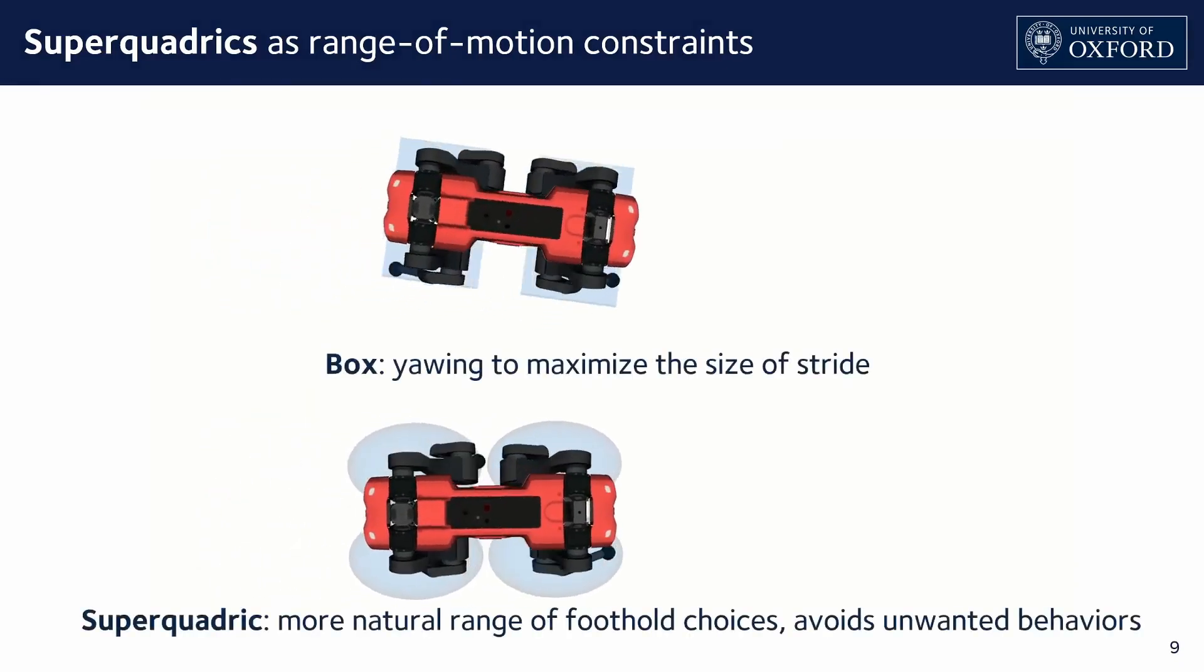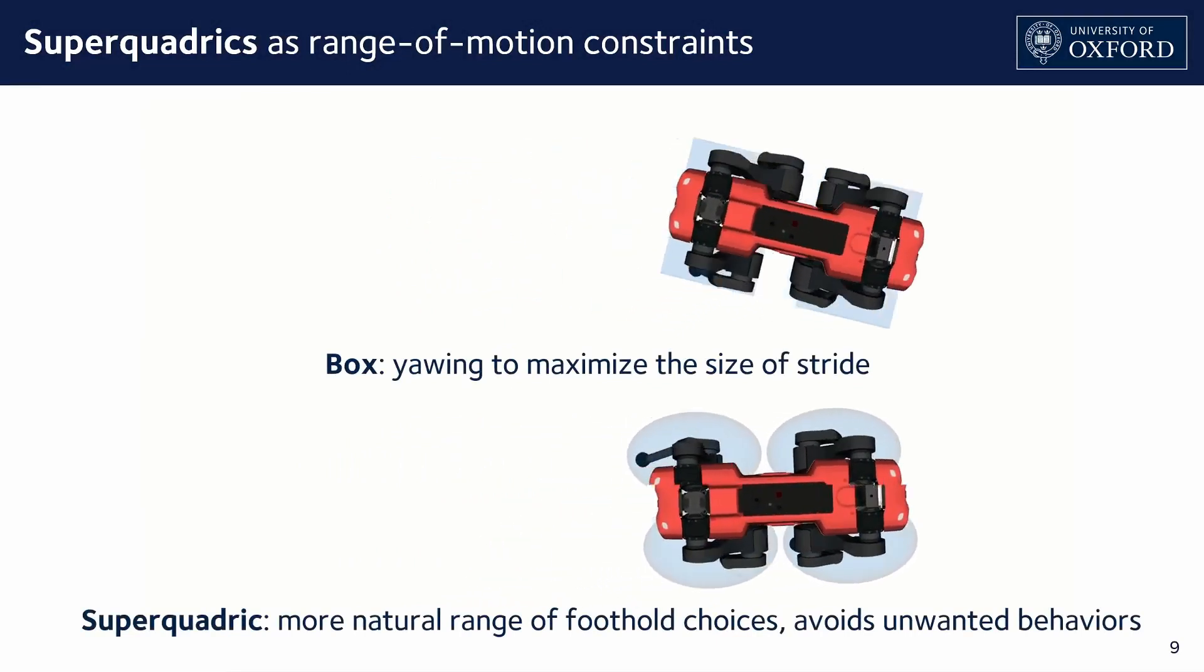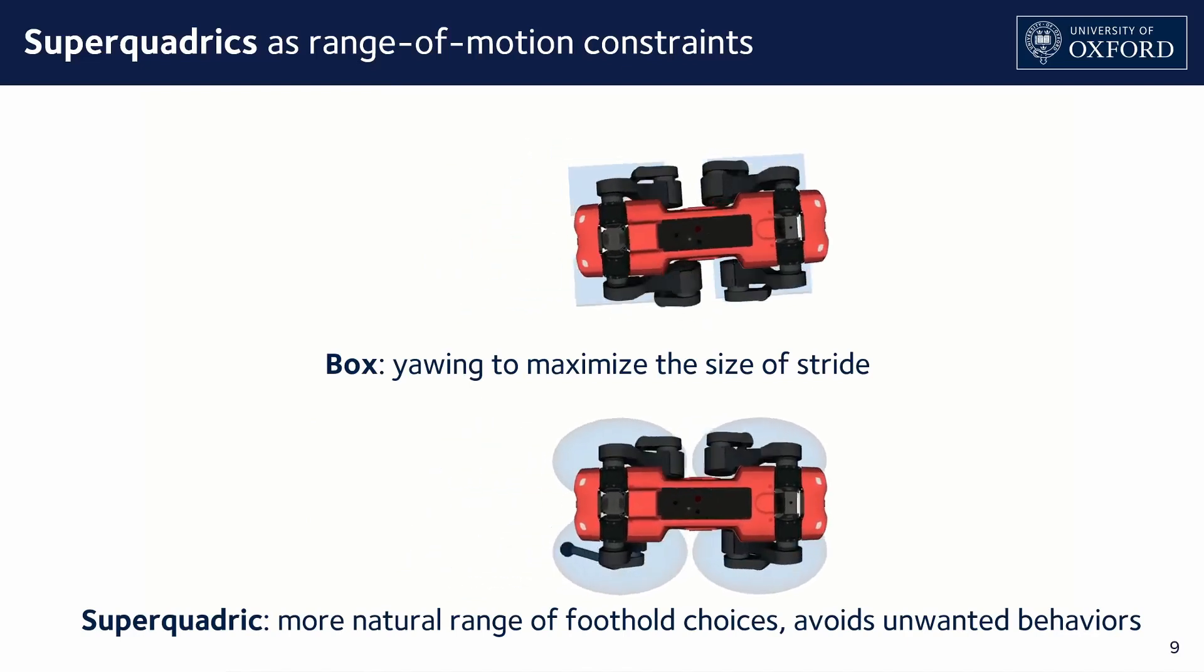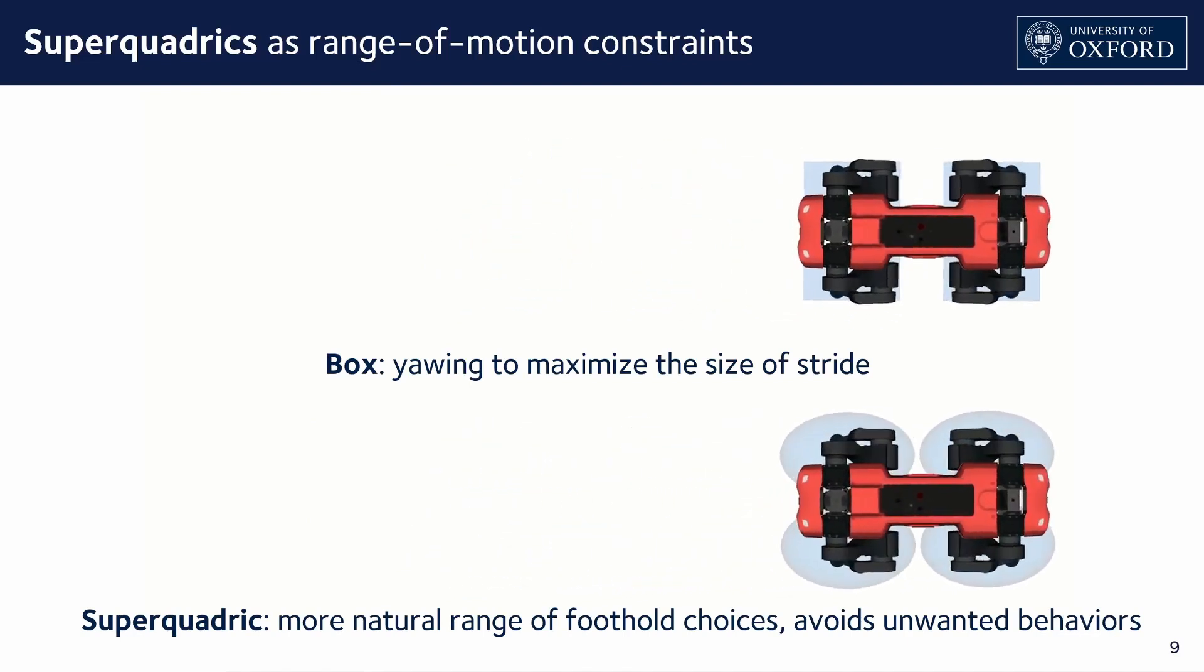When using just the box, the robot exploits its corners in an attempt to maximize the length of the stride. Superquadrics help avoid this unwanted behavior while creating a larger operational space.